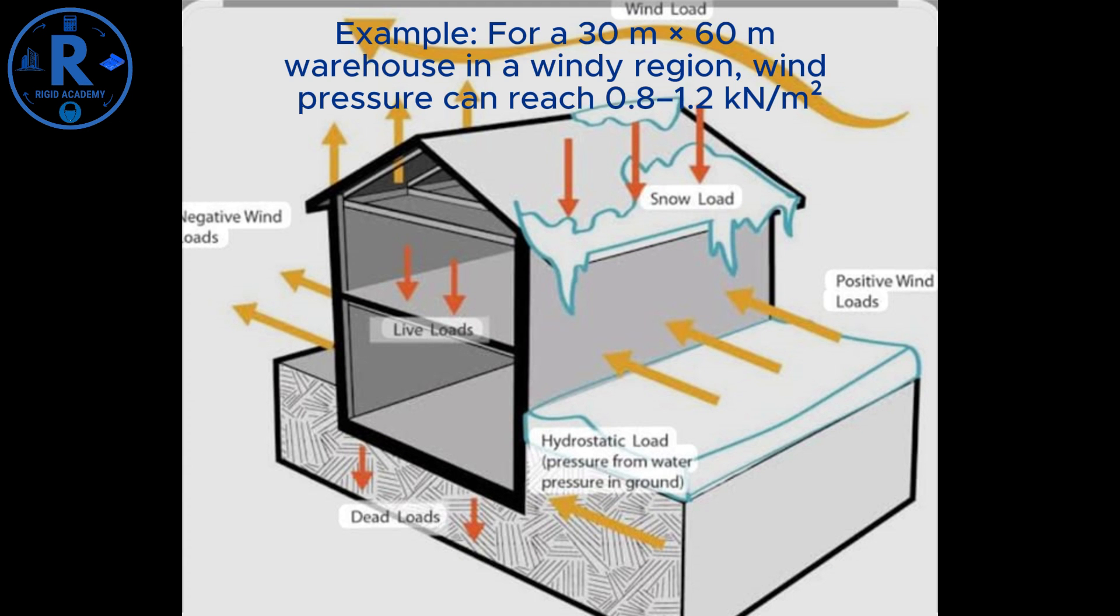For a 30-meter by 60-meter warehouse in a windy region, wind pressure can reach 0.8 to 1.2 kilonewtons per square meter, significantly affecting truss sizing.